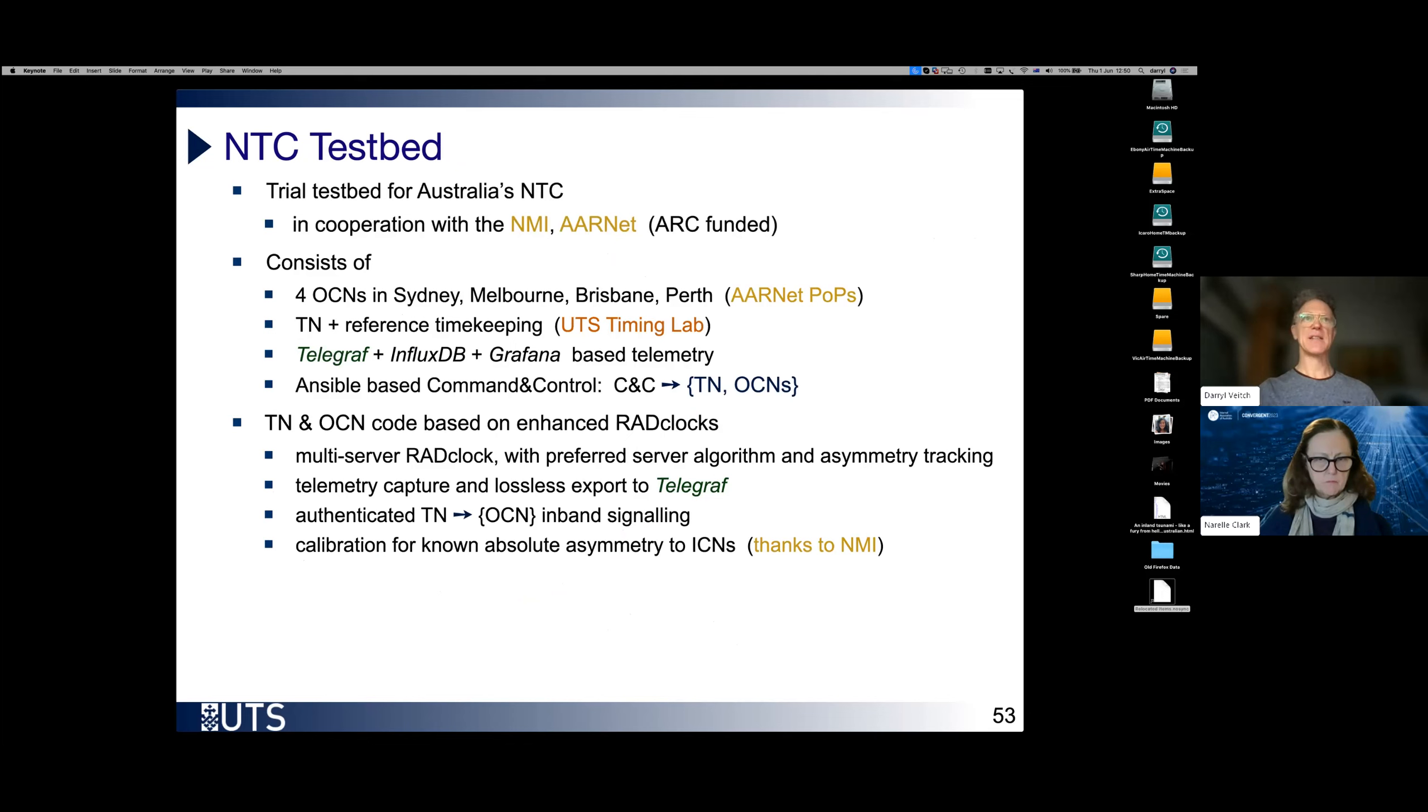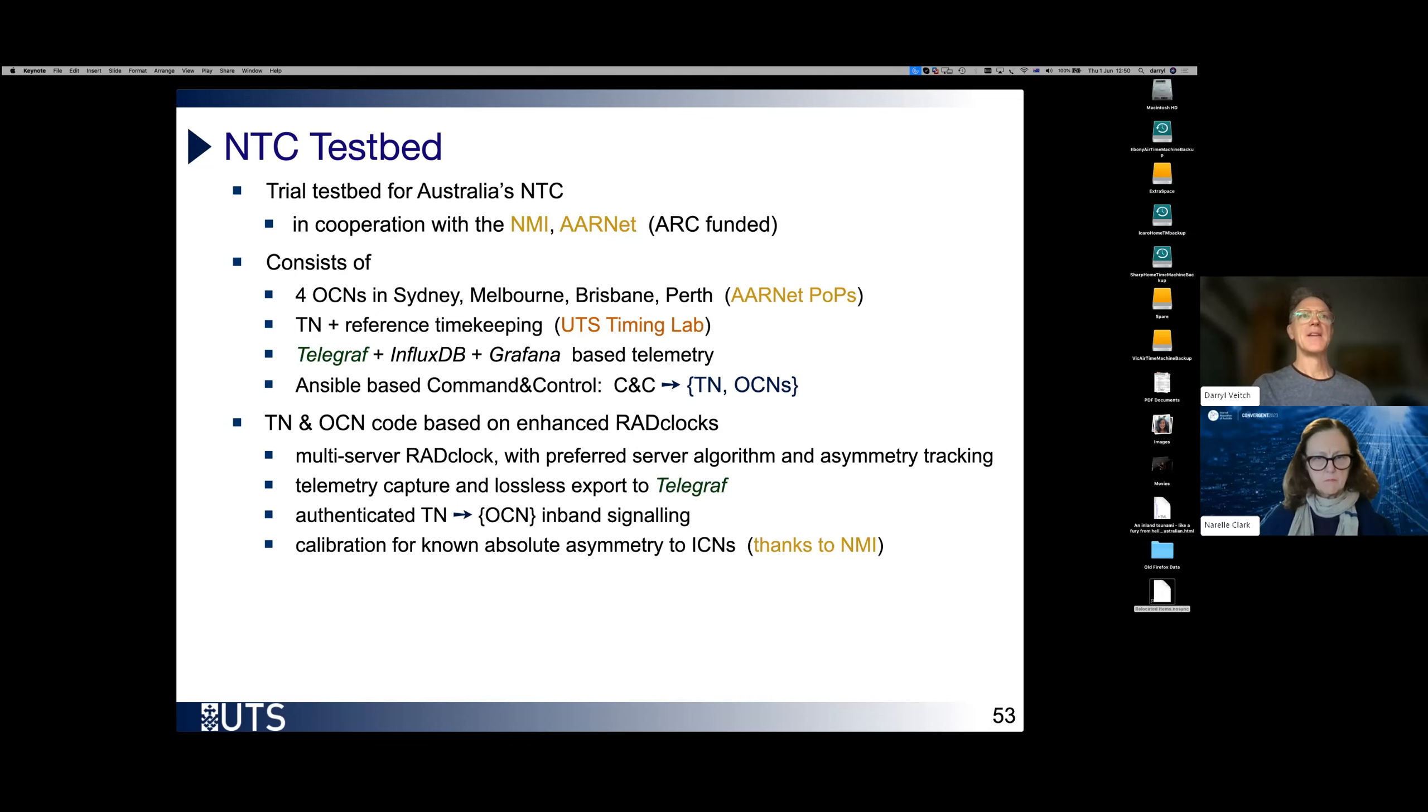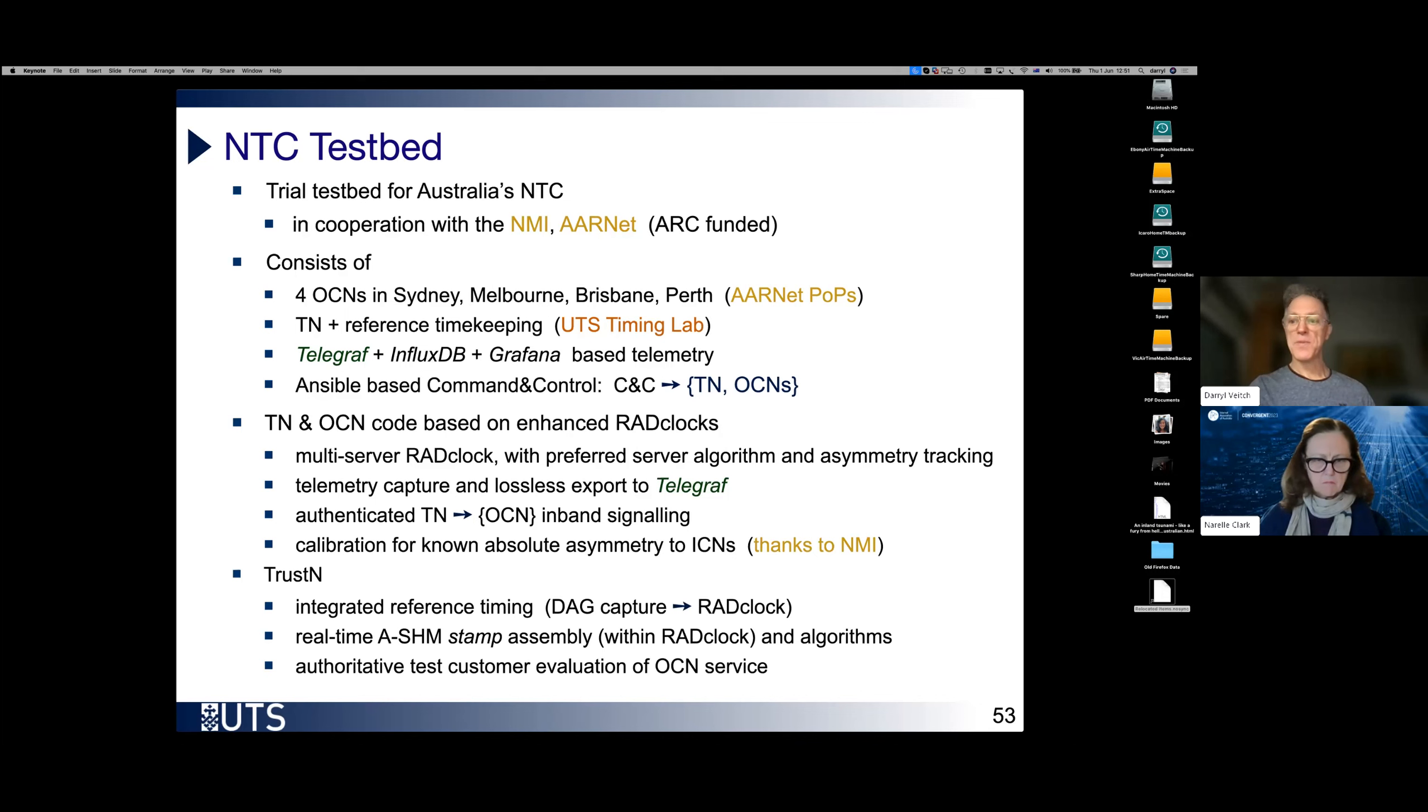We have Telegraf, plus InfluxDB, plus Grafana-based telemetry, and SMALT-based command and control. And the workhorse nodes here, the OCN nodes and the trust node, these are RADclocks, but RADclocks with some special additional bits of software. And the trust node performs the server health monitoring, keeping an eye on all the nodes. The trust node is using the other nodes as servers in that framework of being able to turn the tables and to pass judgment on servers, keeping an eye on both all the inner core nodes in order to make sure that they are indeed trustworthy, because we're relying on them, and the outer core nodes, because that is the service that's being provided by the system.